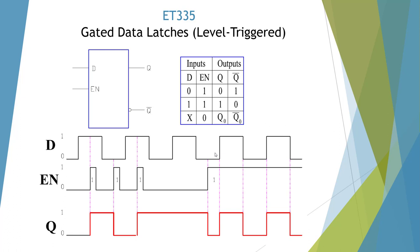Here we have a low — we're going to latch a low. Then it goes high, we latch a high. Goes low, we go low. And then high and low. This is the transparent section — whenever it is enabled we pass the data right on through.